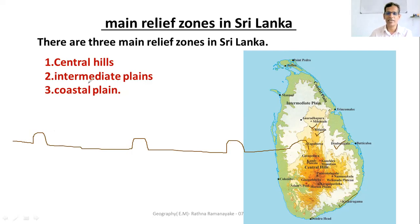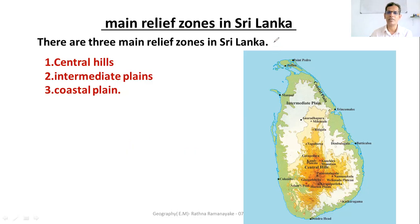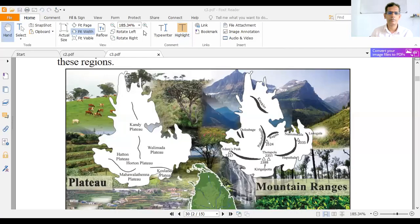Mountain ranges are found in Central Hills. Examples include Knuckles, Pidurutalagala, Samanala, and Praagala. In this map you can see the mountain ranges in the Central Hills: Knuckles, Pidurutalagala, Adam's Peak, Samanala, Aputale, Praagala, and Duluwawagala. These are the mountain ranges in the Central Hills.